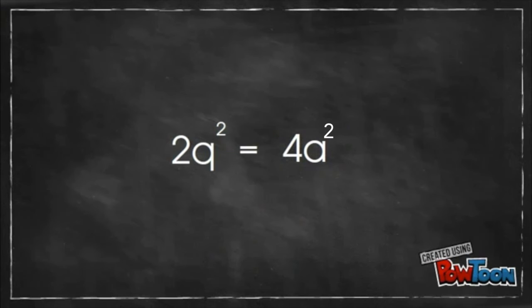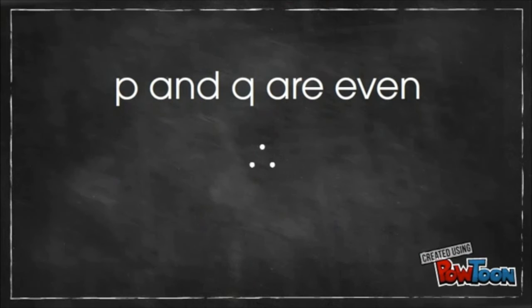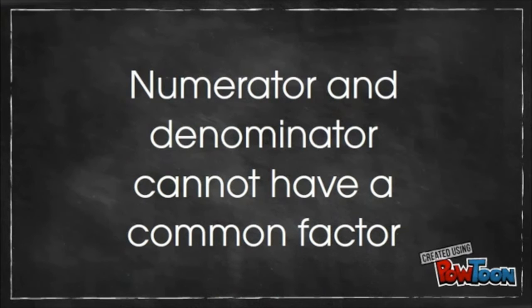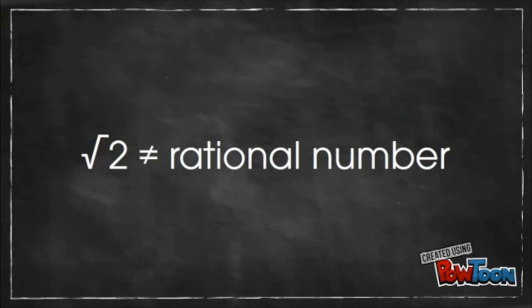By isolating q, he again found that it was an even number. Since both p and q are even numbers, they have a common factor of 2, which contradicts his first statement, that the numerator and denominator could not have a common factor. Thus, root 2 is not a rational number.